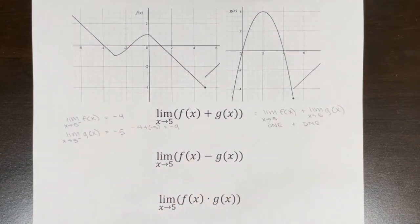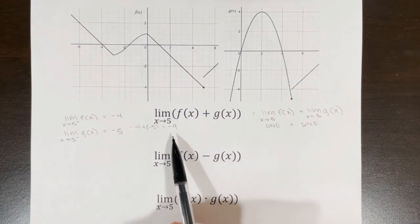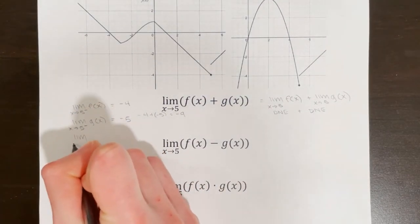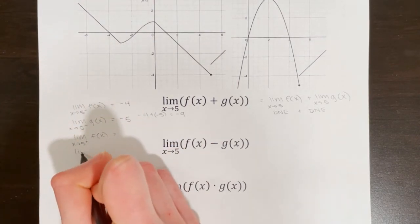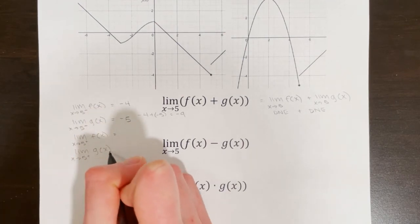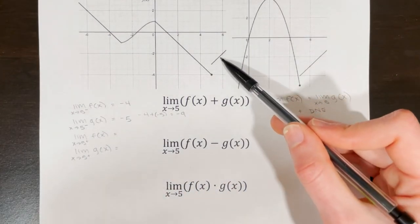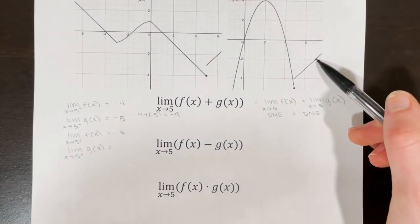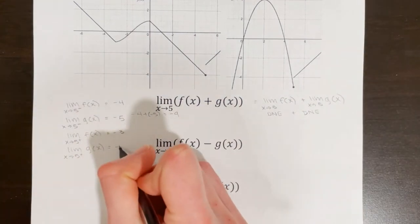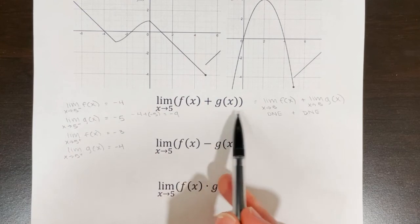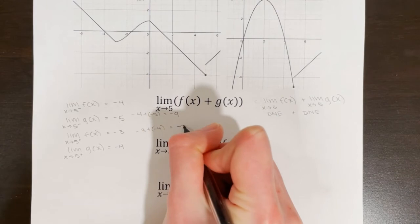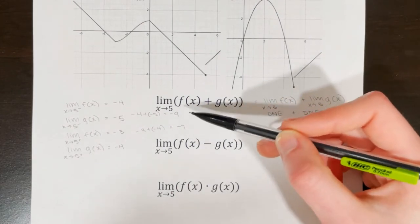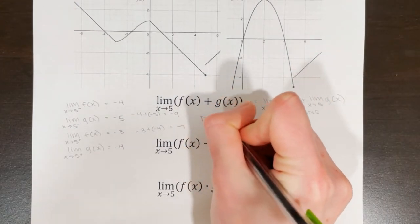Now I find the overall right-sided limit. If it matches the left, that's the limit; if not, the limit does not exist. For the right-sided limit of f(x) as x approaches 5, y approaches negative 3. For g(x) approaching from the right, y approaches negative 4. Adding them: negative 3 plus negative 4 is negative 7. Since negative 9 does not equal negative 7, the overall limit does not exist.